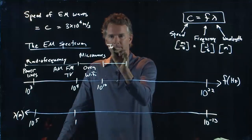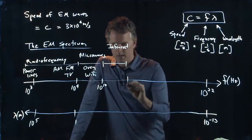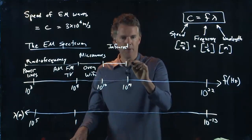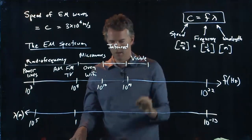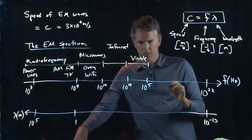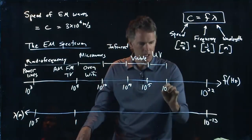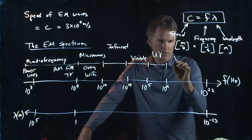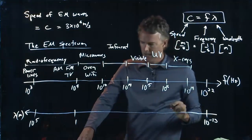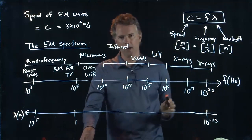After that, we get infrared. Infrared goes up to about 10 to the 14, 10 to the 13, 10 to the 14, somewhere in there. And then after infrared, we get to visible, and visible goes from 10 to the 14 up to about 10 to the 15. If we keep going to higher frequencies, we get to UV. UV gets up to about 10 to the 16, and then we get to x-rays. X-rays go all the way up to about 10 to the 19. And then the very last bit is something called gamma rays, and gamma rays can go as high as 10 to the 22.